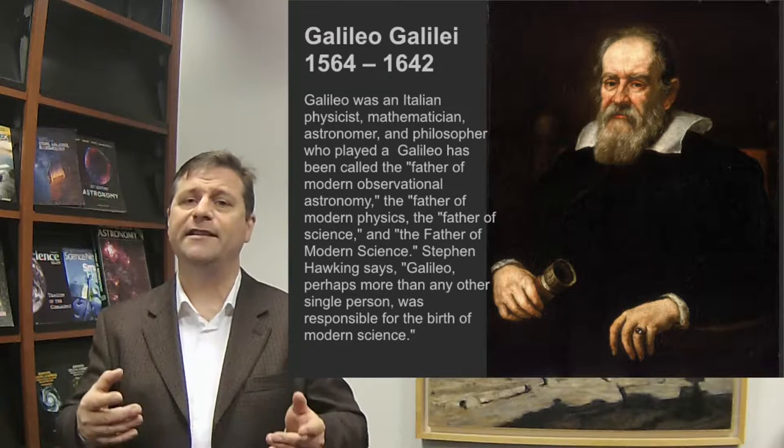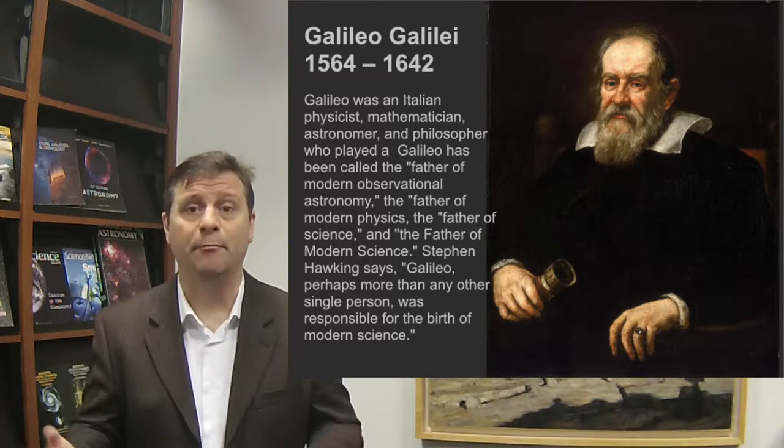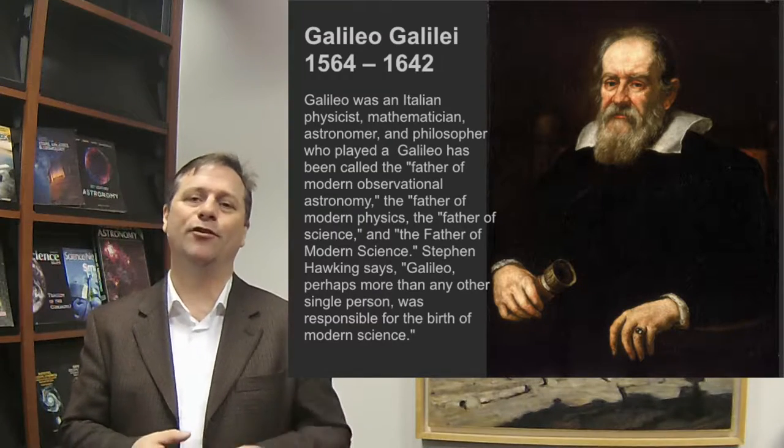What we didn't talk about is a particular person typically credited with having done the whole thing, an incredible figure in all of science considered to be the father of science. His name is Galileo Galilei, a scientist, mathematician, and public figure who was born in 1564 and passed away in 1642. Galileo did an enormous amount of work to propagate the idea of the Copernican model of the solar system.